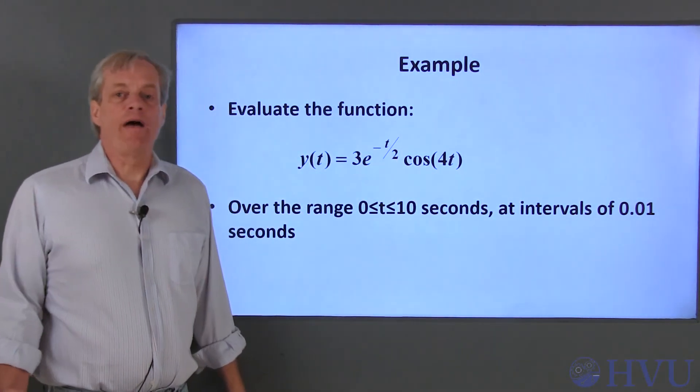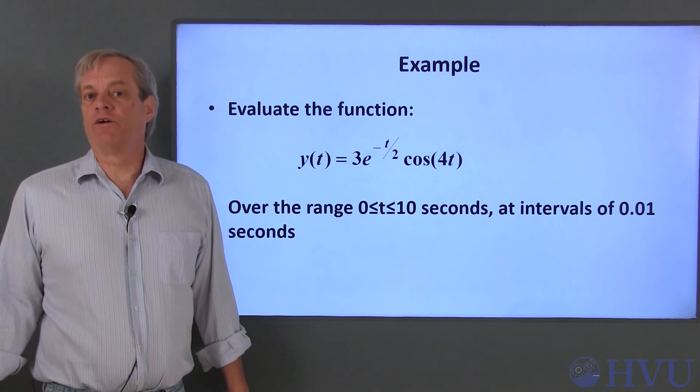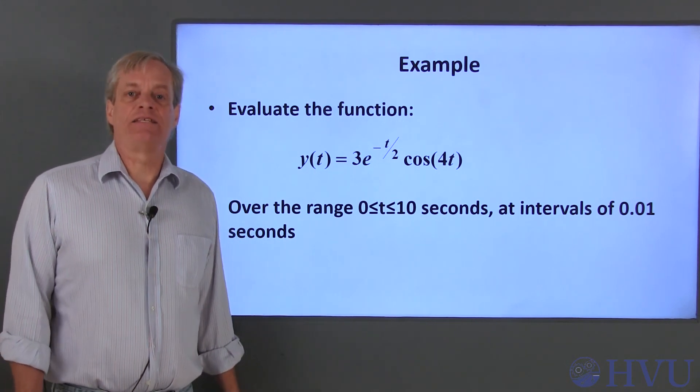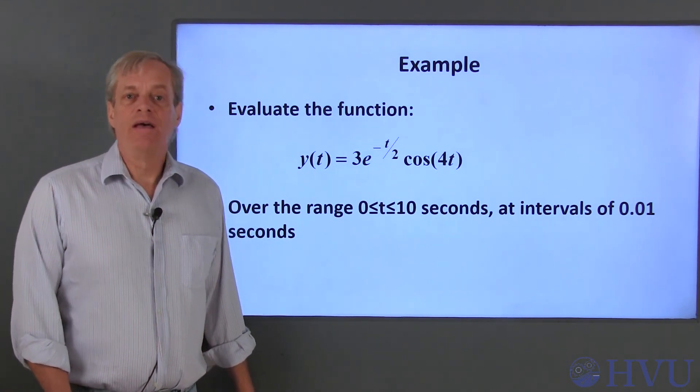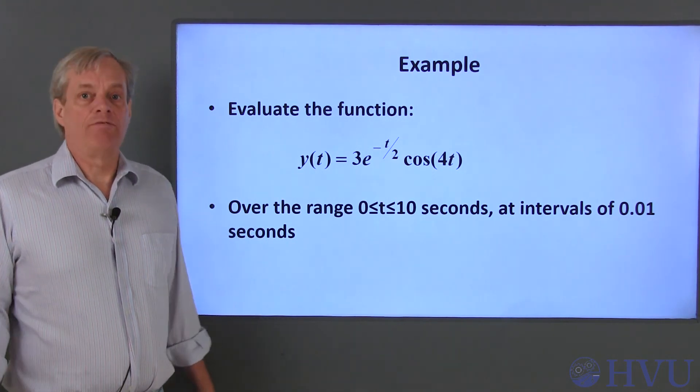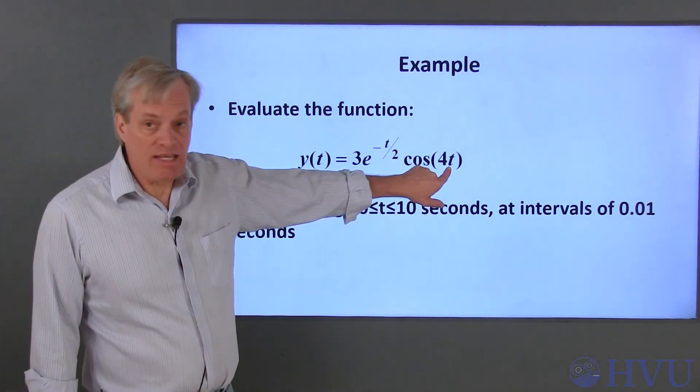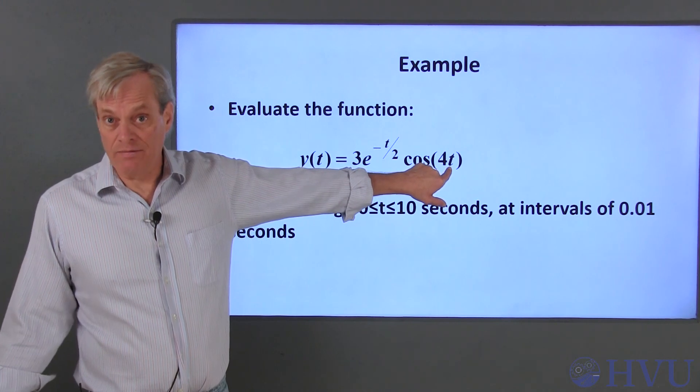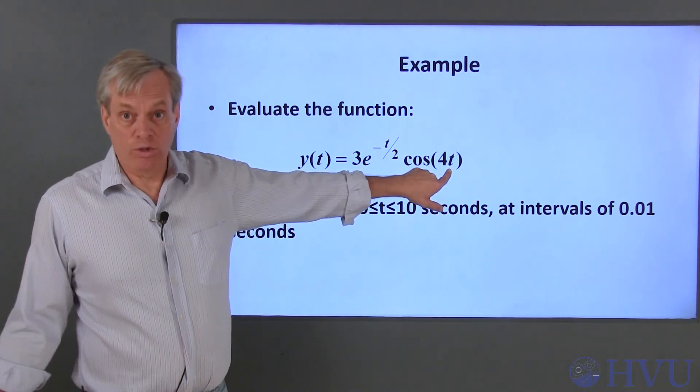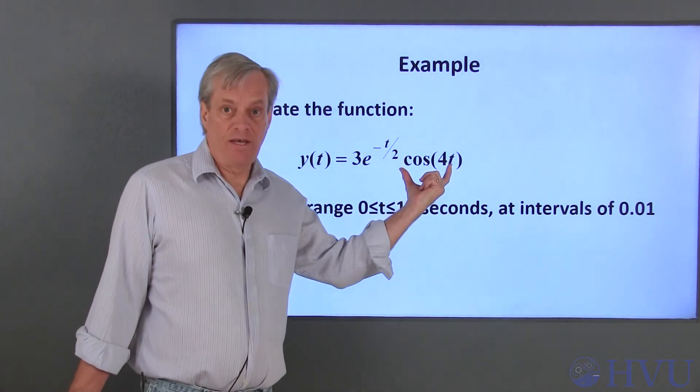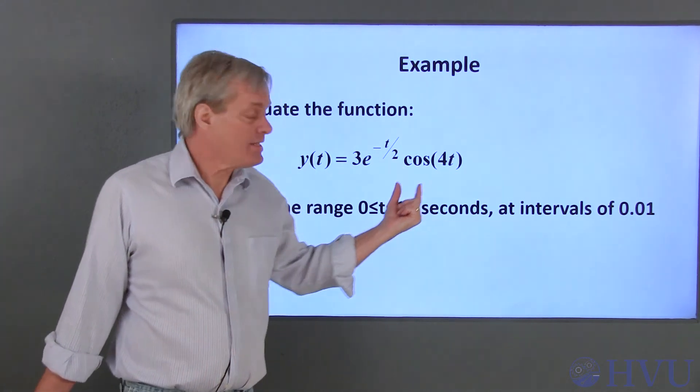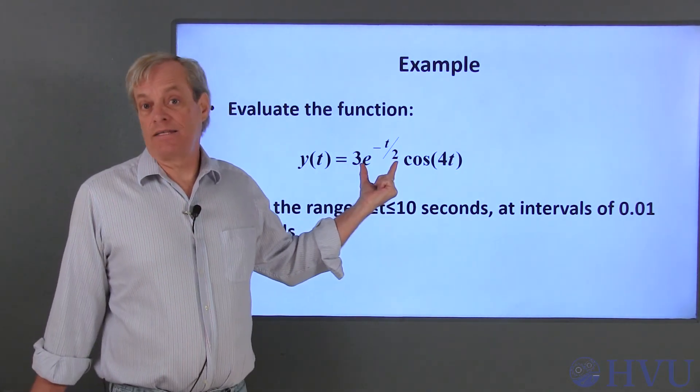For the most part, mathematical functions return an array which is the same size as the array that's sent to it. There are a few things we need to keep track of here. We'll have a vector of times t with 1001 points in it. So the cosine of 4 times t will also be a vector with 1001 points, as will e to the minus t over 2.